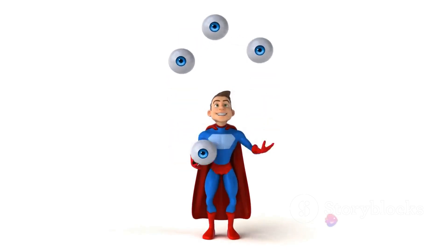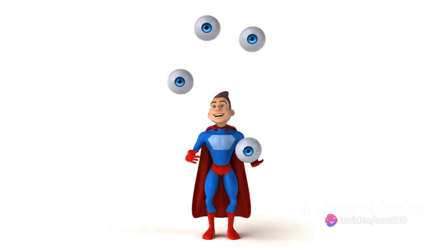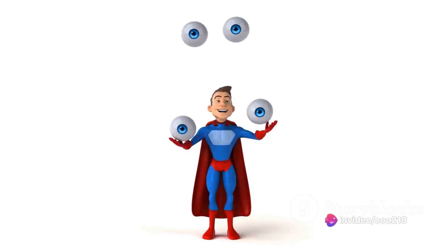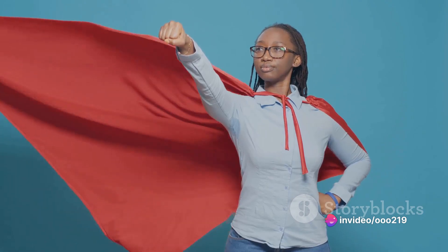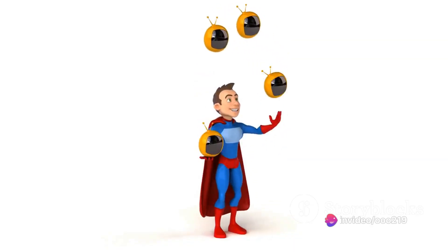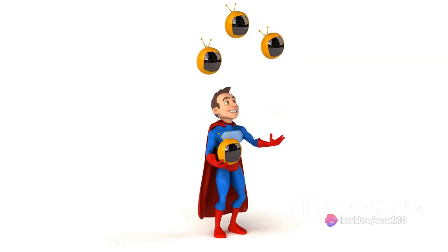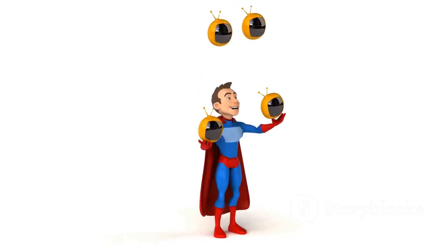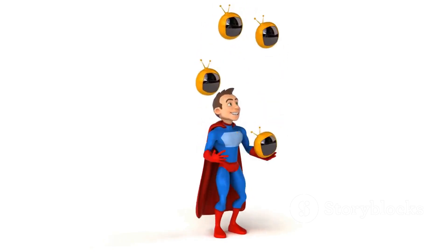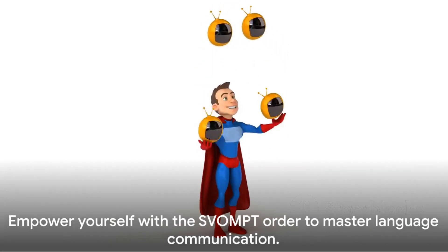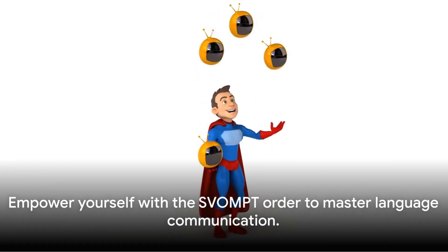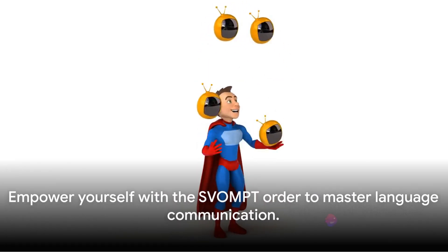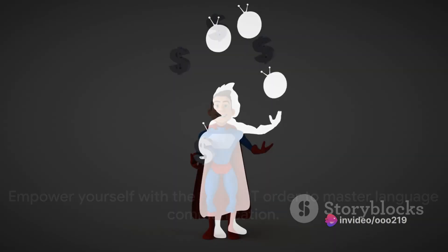Remember, he says, the SVOMPT order is not just a tool for combat. It's a framework for clear communication. Subject initiates, verb acts, object receives, manner describes, place locates, and time times. Use it wisely, and you too can become a master of language.